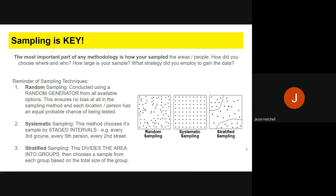Systematic sampling is at staged intervals. For example, every third groin, every fifth person, every second street. Stratified sampling divides an area or group into smaller groups and then chooses a sample size from each group that represents the size of that group. You can see visually on the right what those three sampling methods look like.